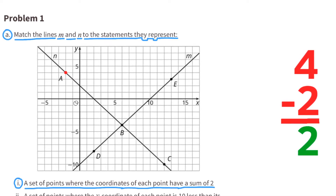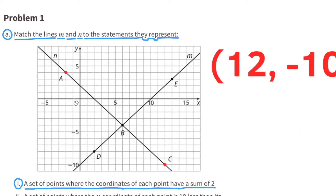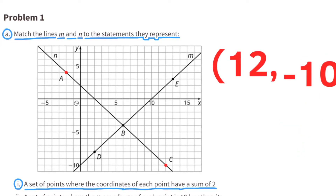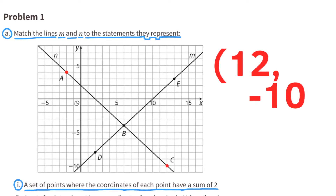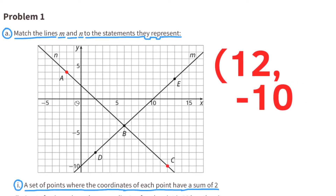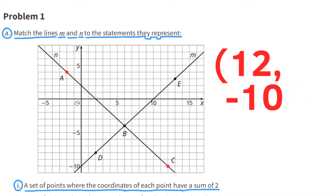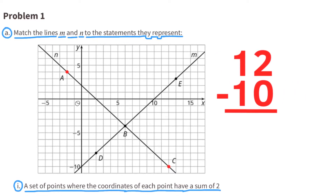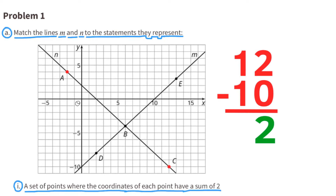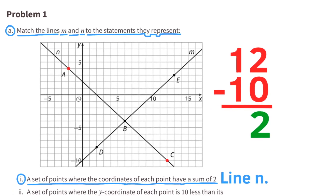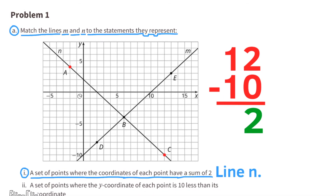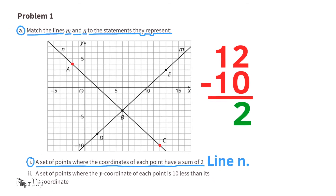Let's look at another point on line N: point C. The coordinates for point C are 12 and negative 10. That's like 12 minus 10, or 12 plus a negative 10, so the sum is 2. The coordinates of the points on line N have the sum of 2.